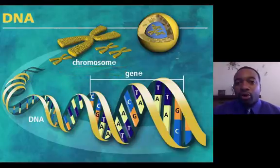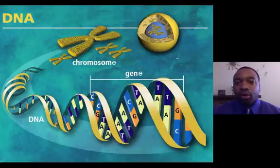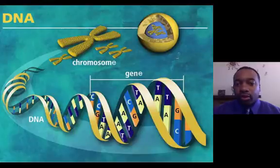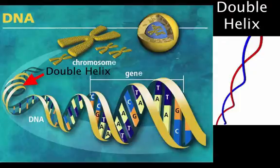Recall the X mark is actually a chromosome and it's identical copy attached to it. So if we were to uncoil the DNA and look closer at it, we'll see this double helix shape that we've referred to in the past.